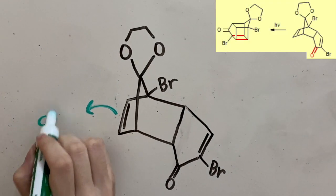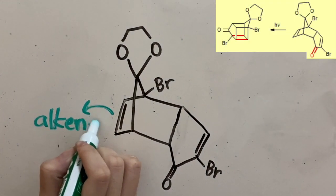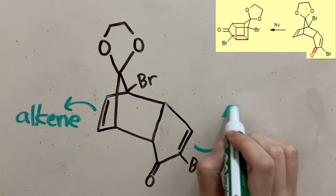For this mechanism, this is the alkene that reacts with this enone.